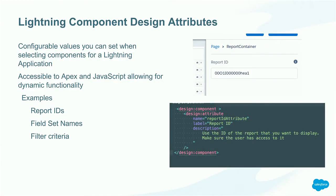The thing I want to focus on today is the design attributes in Lightning Components. These design attributes allow for a lot more configuration on the front end. They're a little more one-off — not as heavy as a custom metadata type where you have to figure out the schema. They're customizable specifically to each component you make, and you can configure them on the fly as you add components to your apps in Lightning. The design attributes appear in the App Builder when you click a Lightning component — things like Report ID — and they're accessible by JavaScript and Apex, allowing dynamic functionality based on those inputs.